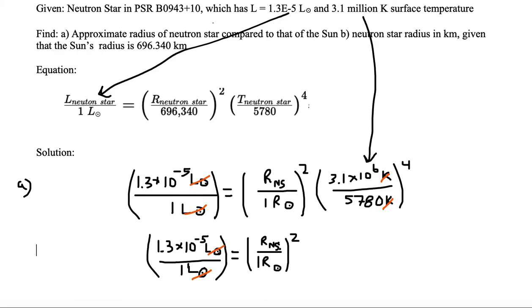Let's write that in: 8.3 times 10 to the tenth. It has no units because Kelvin dropped out, so we just have a unitless number.